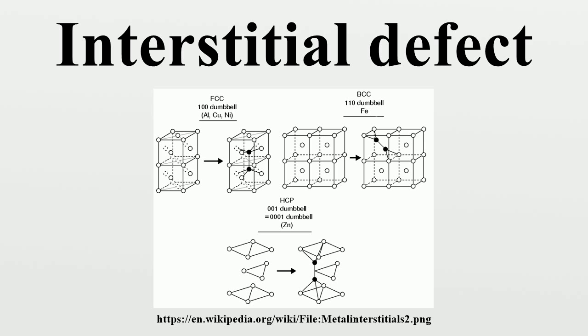For instance, in several common FCC metals such as copper, nickel and platinum, the ground state structure of the self-interstitial is the split interstitial structure, where two atoms are displaced in a positive and negative direction from the lattice site.